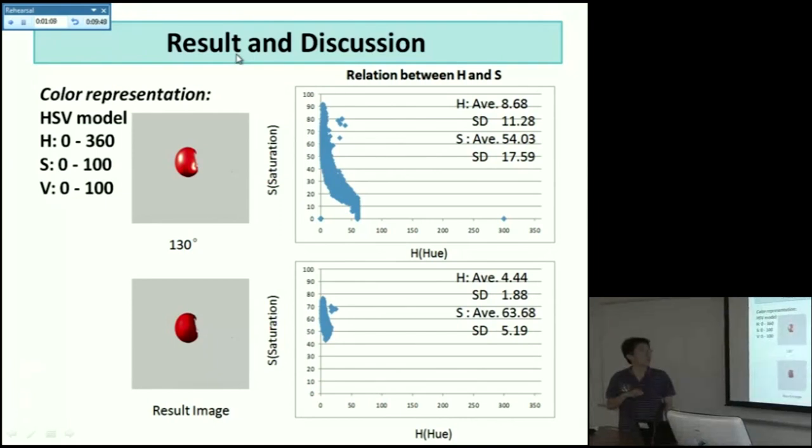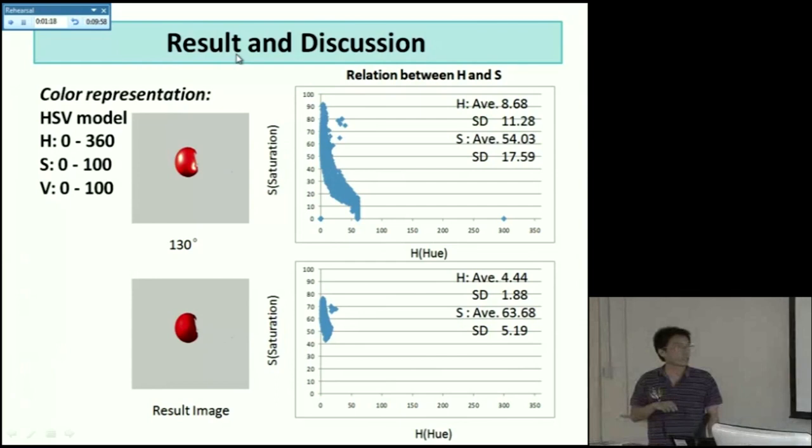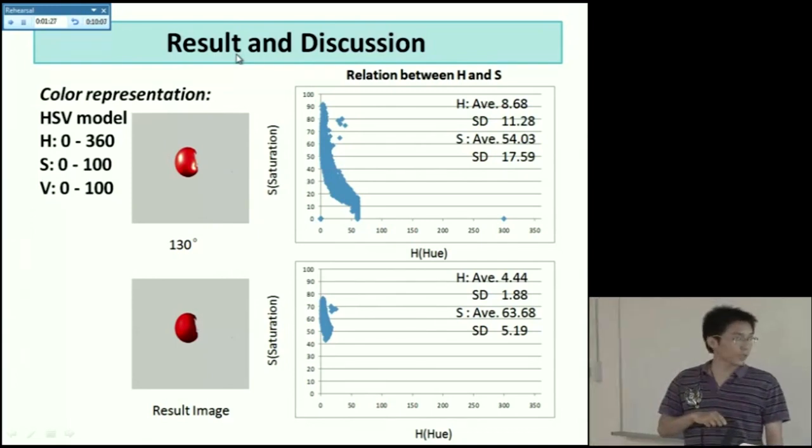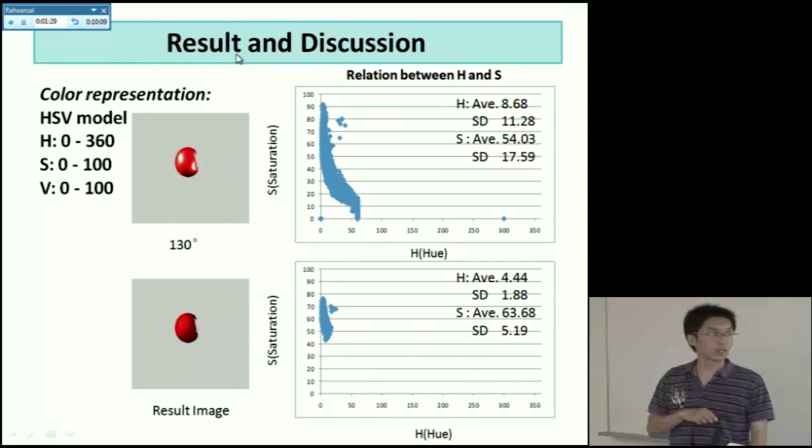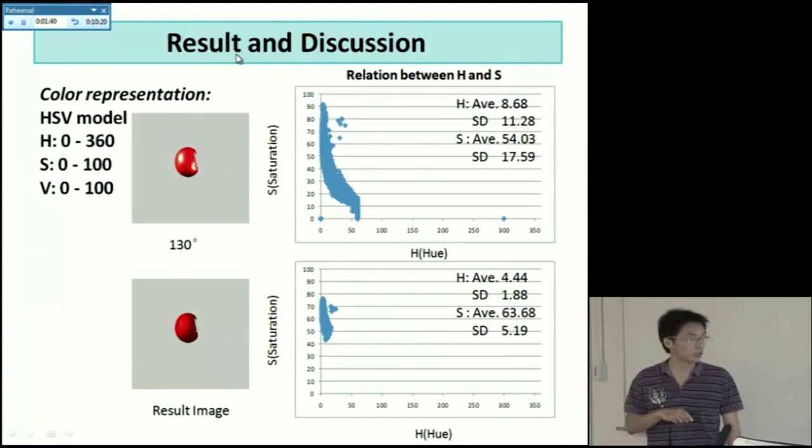And if we compare the standard derivation of the H-value and the S-value, we can see in our result image, the standard derivation is much lower than the standard derivation in the original image. Which means the H-value and the S-value became more consistent. It also indicates that our image color representation can be improved.